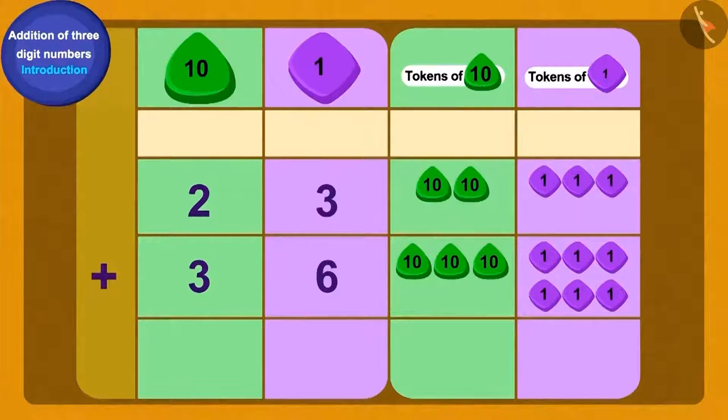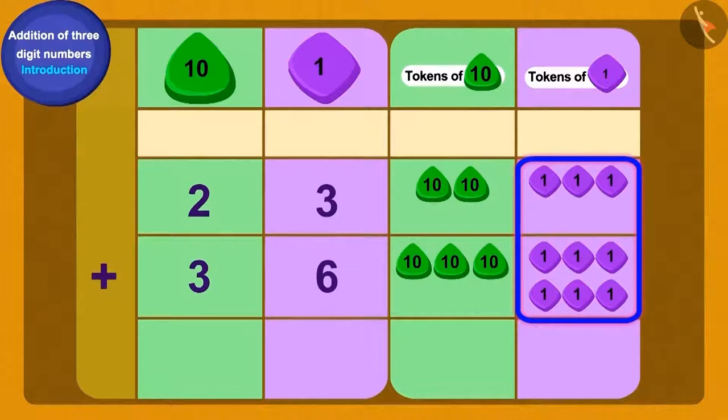Do you remember you learned in class two about how to write two-digit numbers using the method of tokens of tens and ones? We can write 23 and 36 using tokens like this. We will first add the ones tokens. Add 6 ones to 3 ones and we get how many ones? 9 ones.